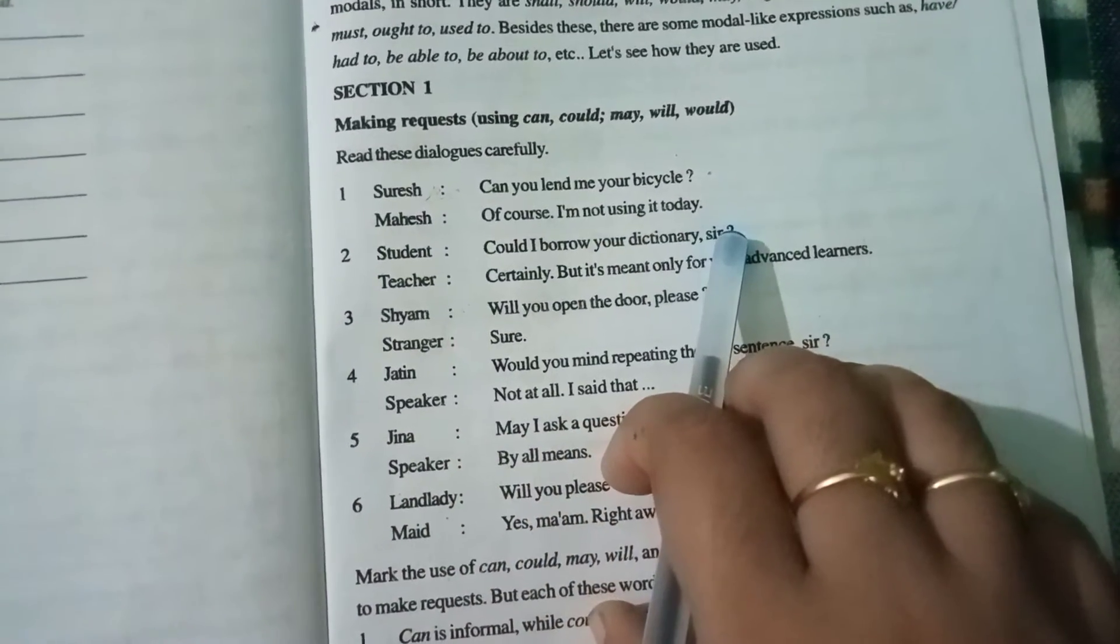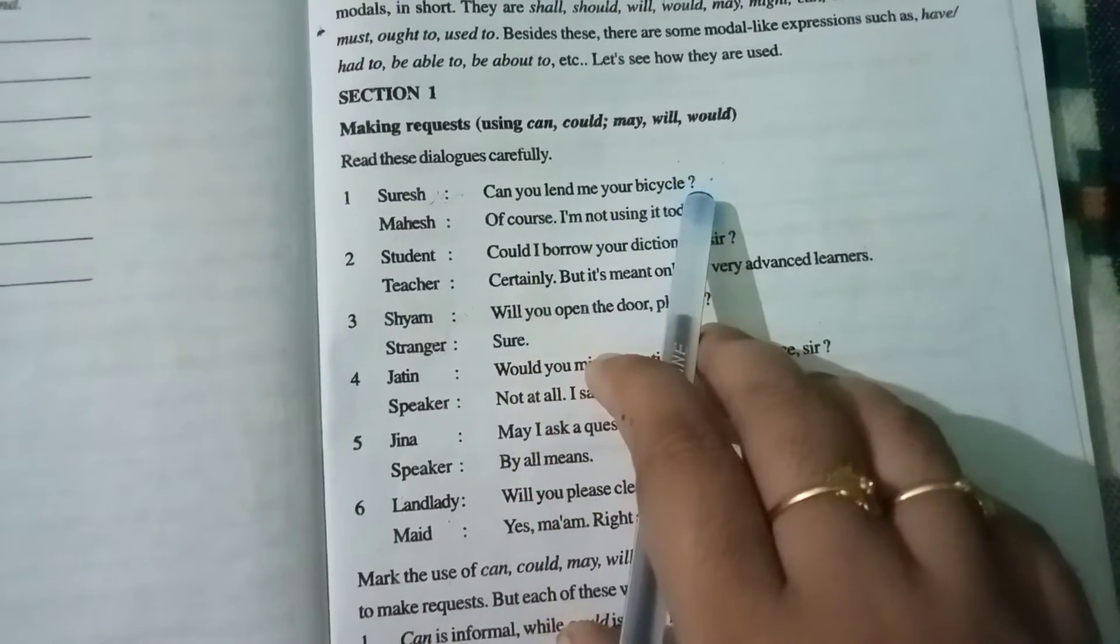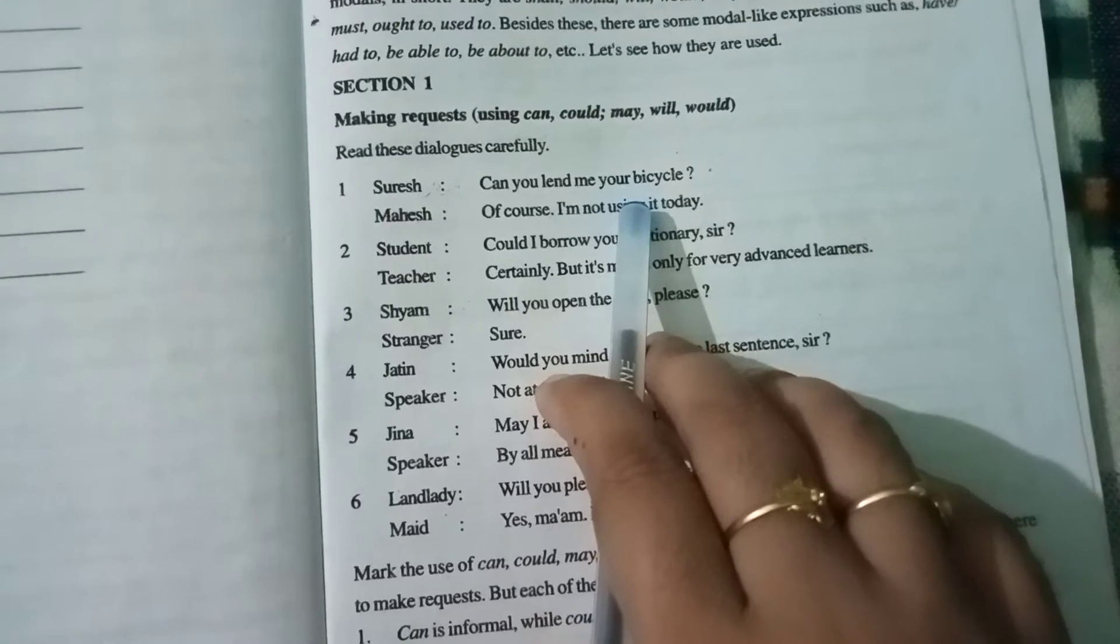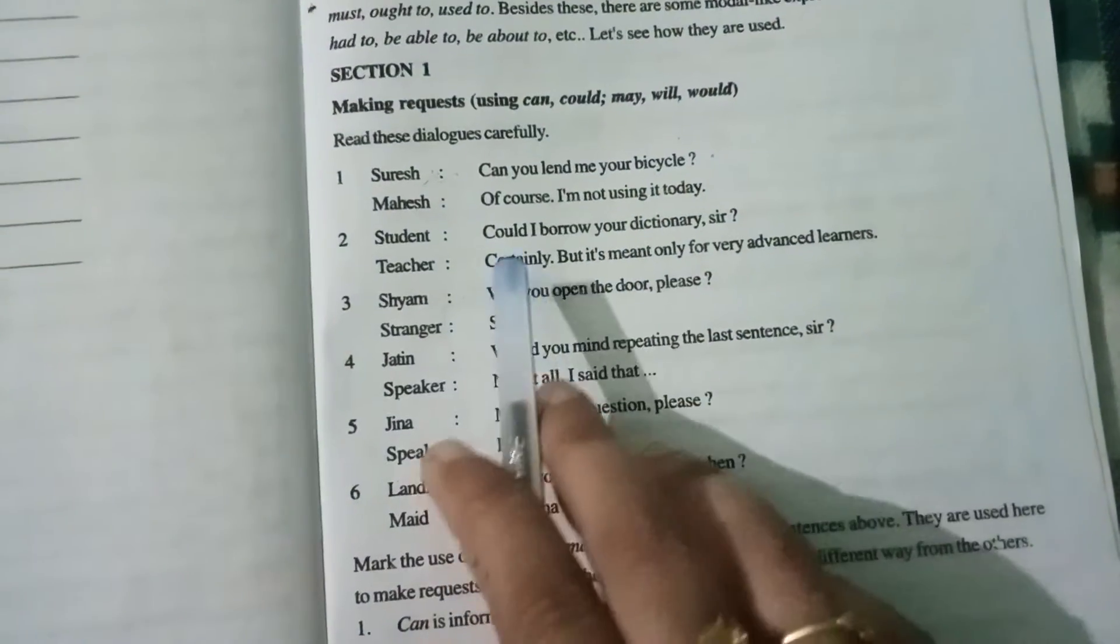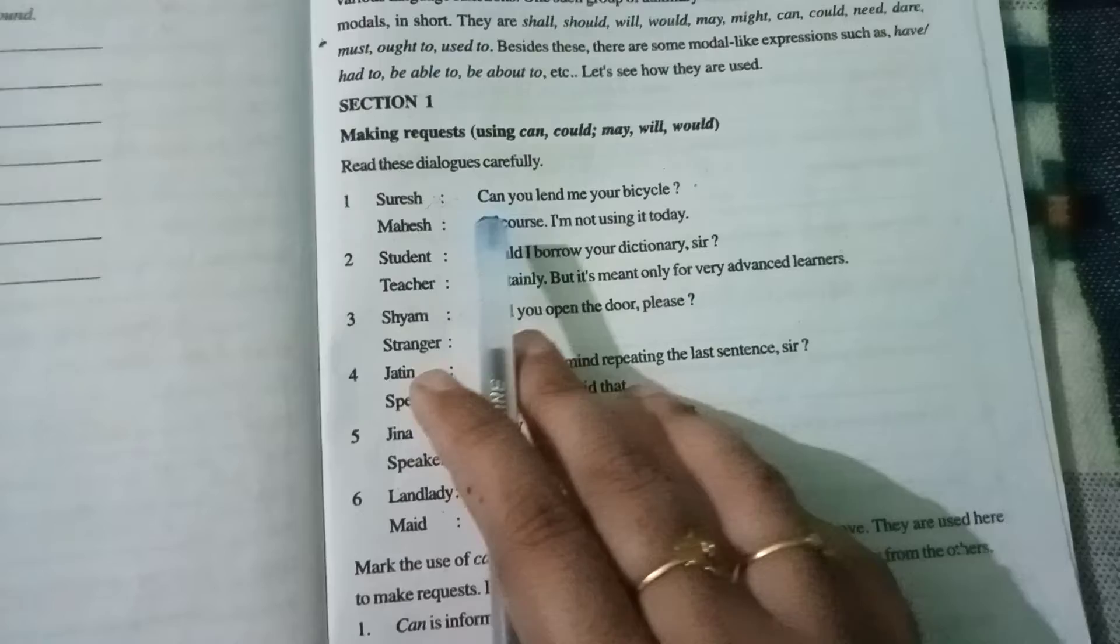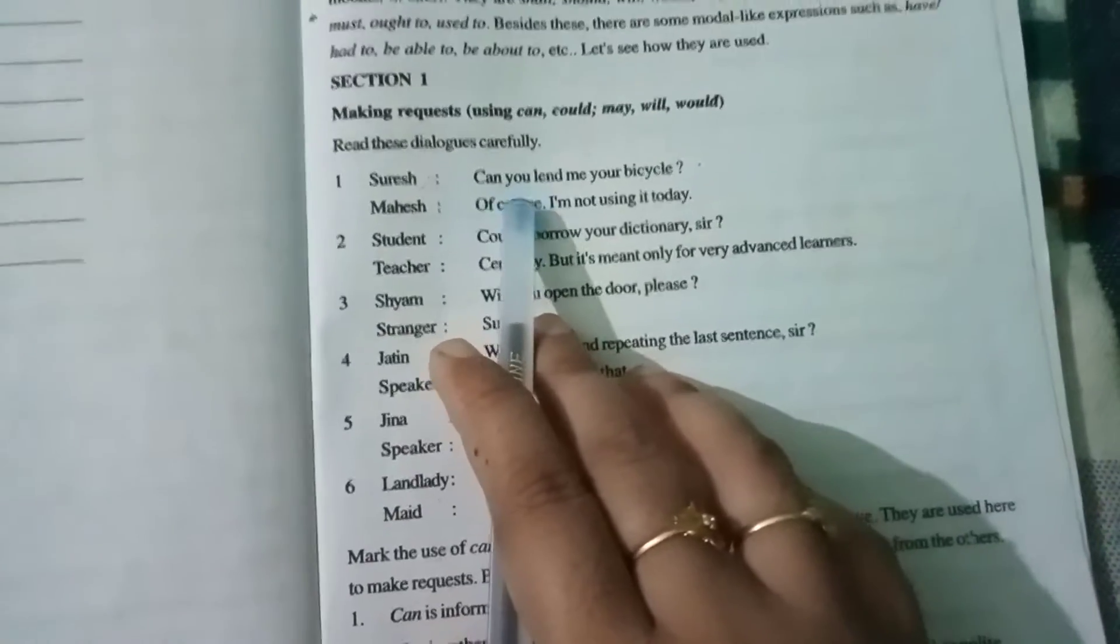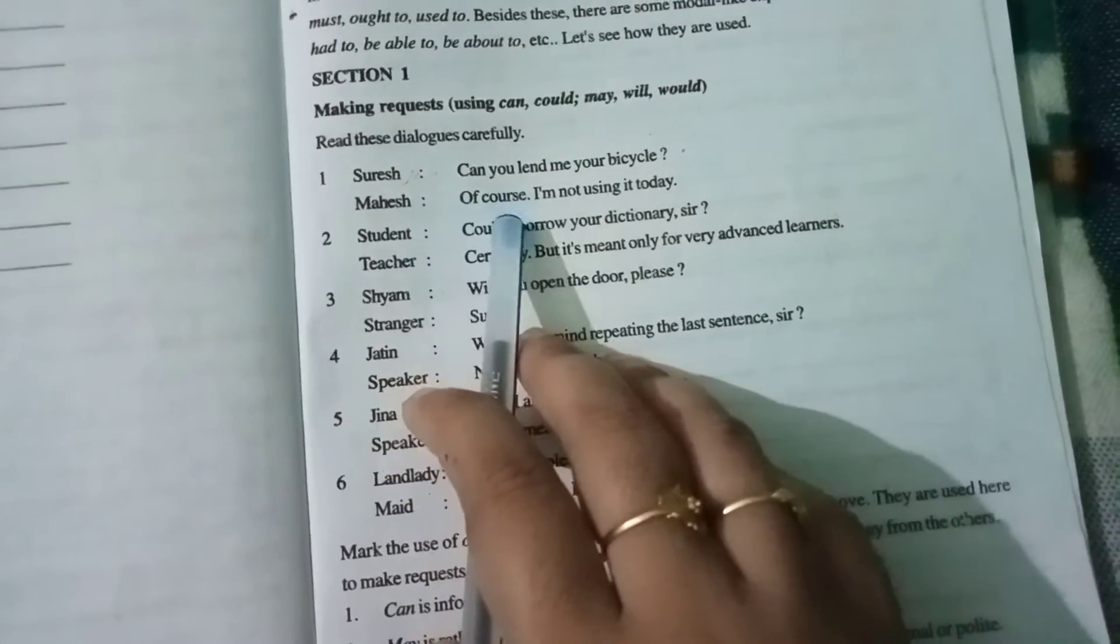So here can is used with informal conversation. I have told you what is formal and informal in my last video you can go through it. So can is used with friends and close relatives. Here, as Mahesh is the friend of Suresh, so informally Suresh is making a request to Mahesh for his bicycle.